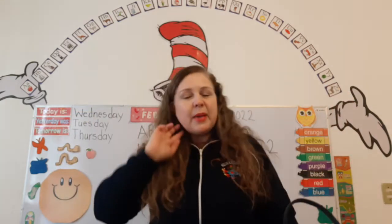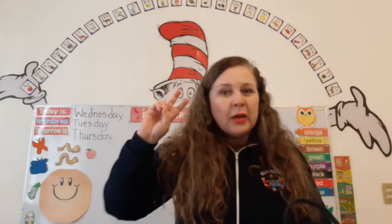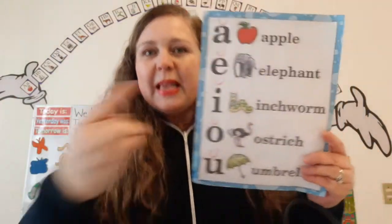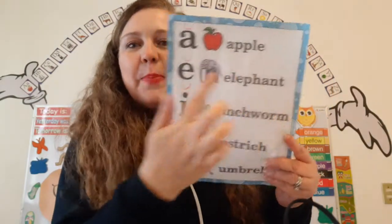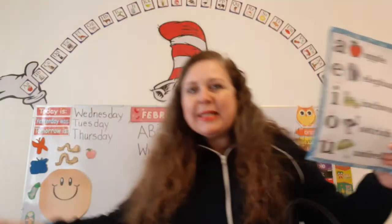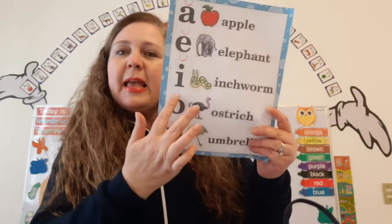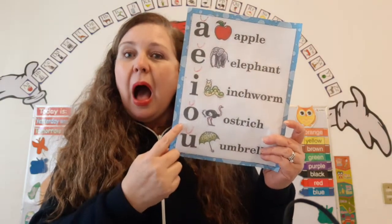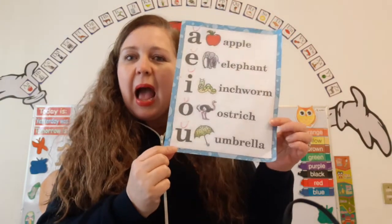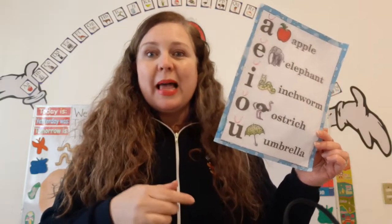And how many sounds do the vowels make? At least two. What are they? The short sound and the long sound. When it's the short sound, we mark it with a happy face. And when it's the long sound, we mark it with a line. Okay, let's review our short vowel sounds. Are you ready? Look — happy face! Let me see your happy face. A — Apple. E — Elephant. I — Inchworm. O — Ostrich. U — Umbrella. Super good.